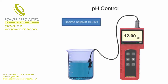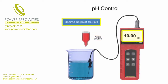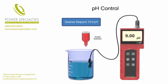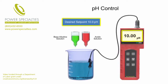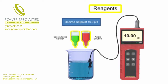When a high alkaline level is detected in the solution, an acid is added to decrease the pH level. When a low alkaline level is detected in the solution, a base is added to increase the pH level. In both cases, the corrective ingredients are called reagents.